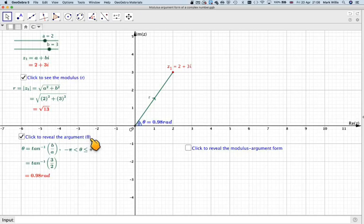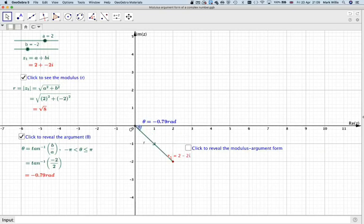And the argument is defined for theta being between minus pi and pi. So if I move it around a bit, if I move it down so it's negative, you can see that theta, the argument, will become a negative angle. OK, it will go all the way round up until this point here, which is minus pi, and then all the way round here it goes from pi. So theta, the argument, is defined from minus pi up until pi.